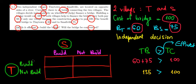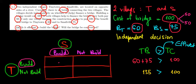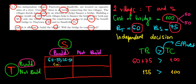If both cities build the bridge, the cost is split 50-50, so each pays 50. The net benefit for Tiny Town is 60 minus 50 equals 10, and for Smallville it is 75 minus 50 equals 25. So the payoff in the both-build cell is (10, 25).